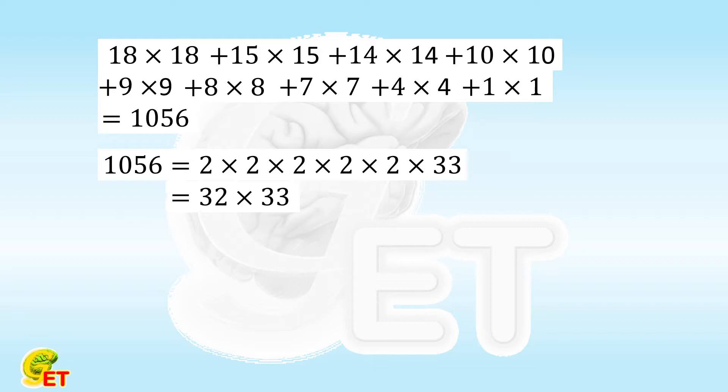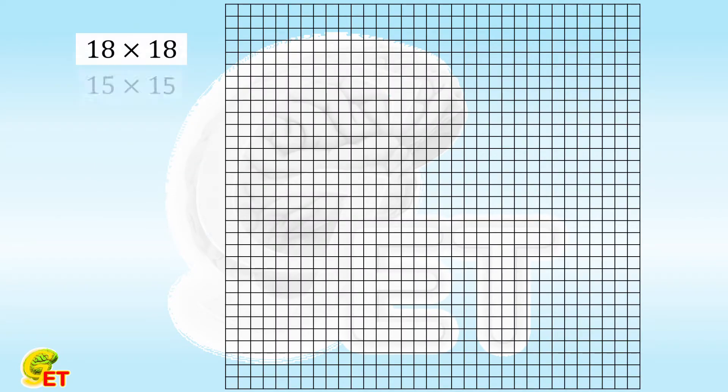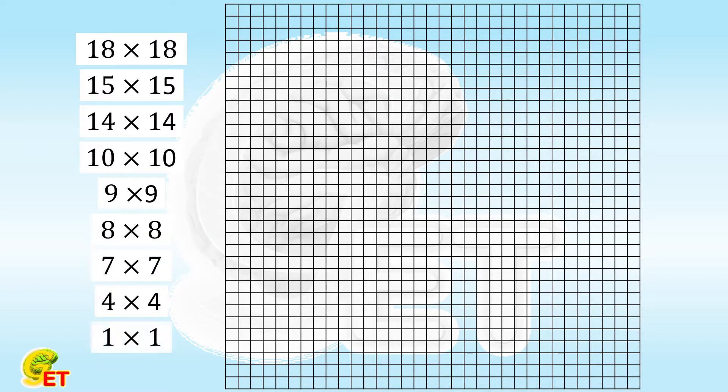We are now trying to put all those 9 puzzles into the 32 by 33 grid. It is always a good strategy to arrange the puzzles from bigger to smaller ones. Let's first put the 18 by 18 puzzle in the corner.